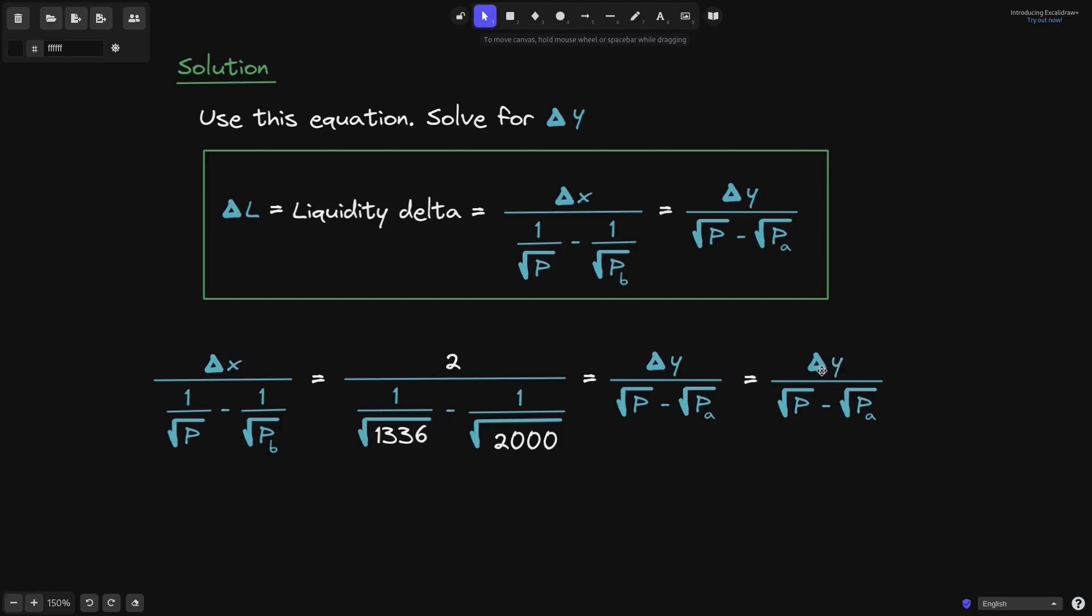And then we'll fill out the variables that we know. We don't know what delta Y is, but we do know what the current price P and P_A are. The current price P is equal to 1,536, and P_A, the lower price range, is equal to 1,000. We filled out all of the variables that we need to calculate delta Y. So let's solve for delta Y.